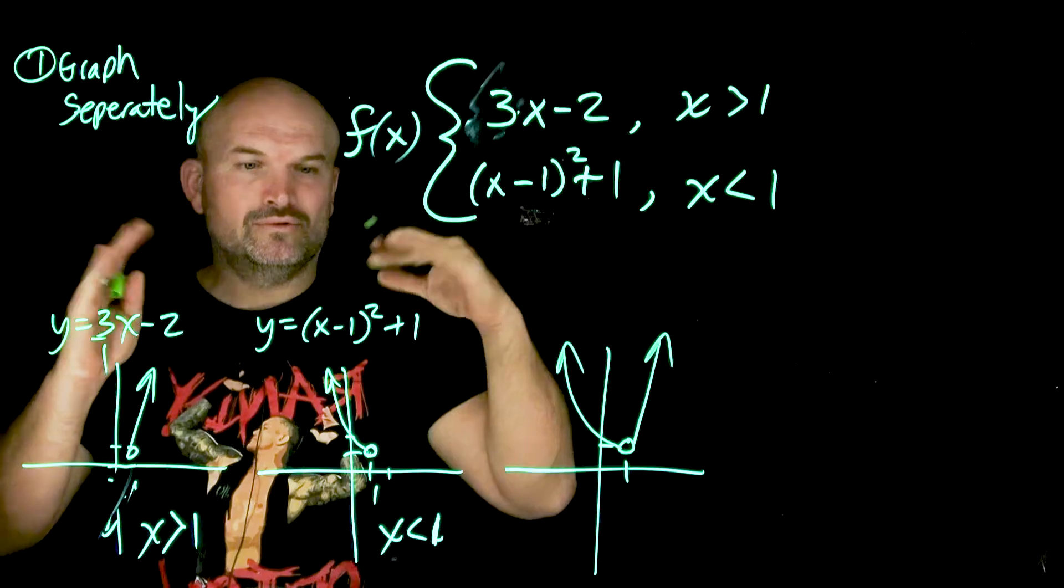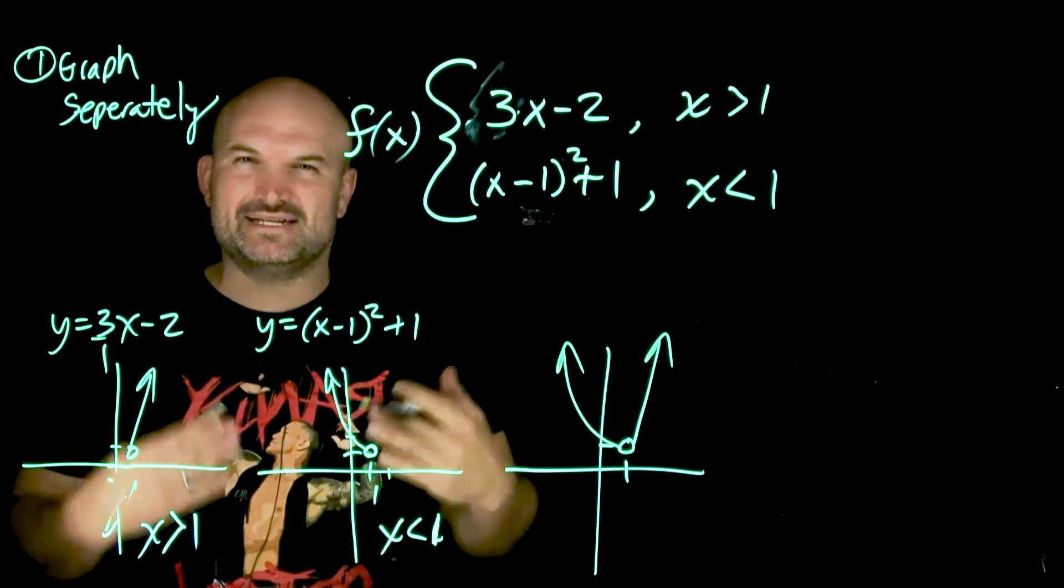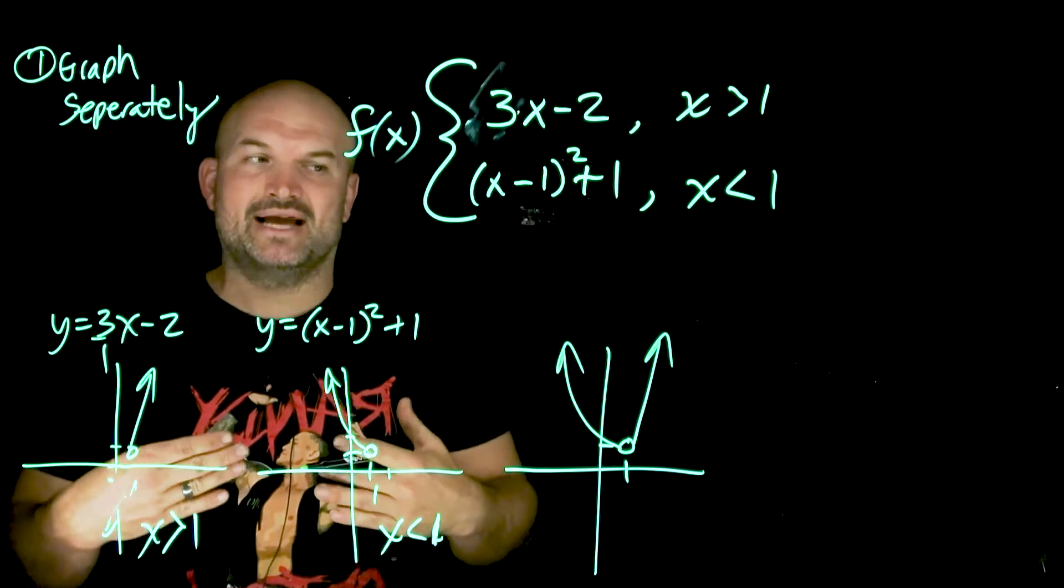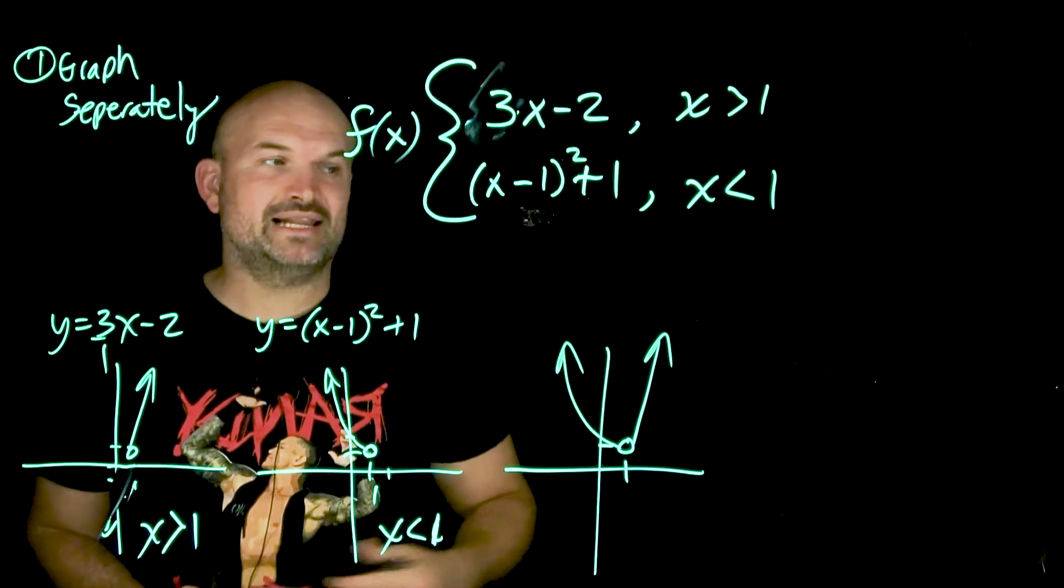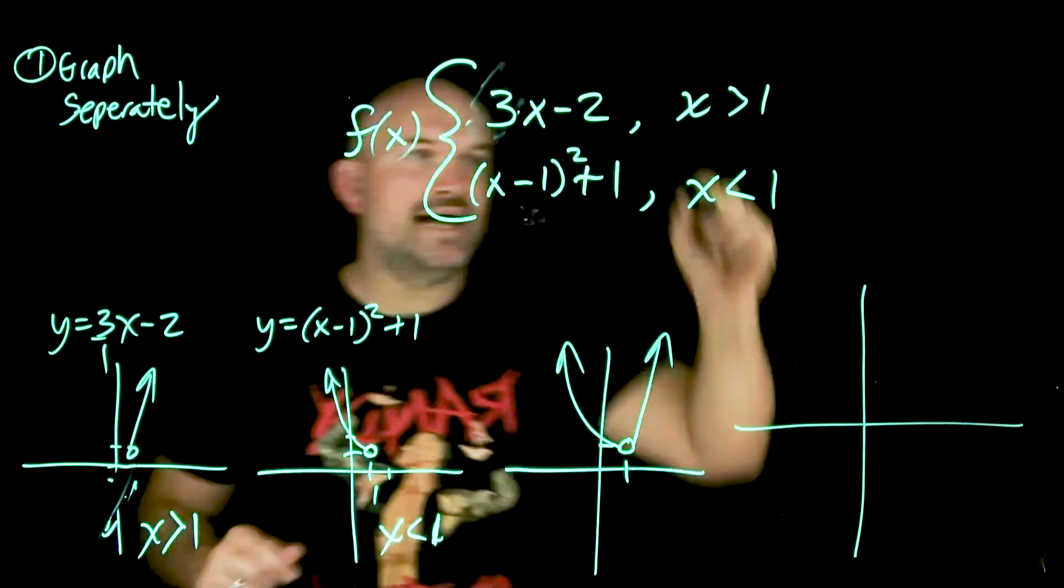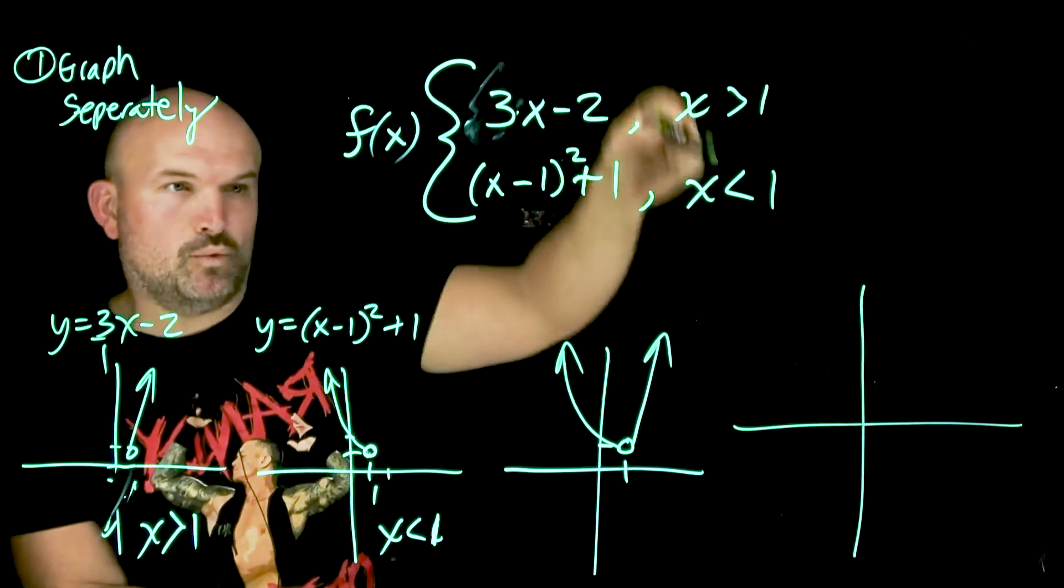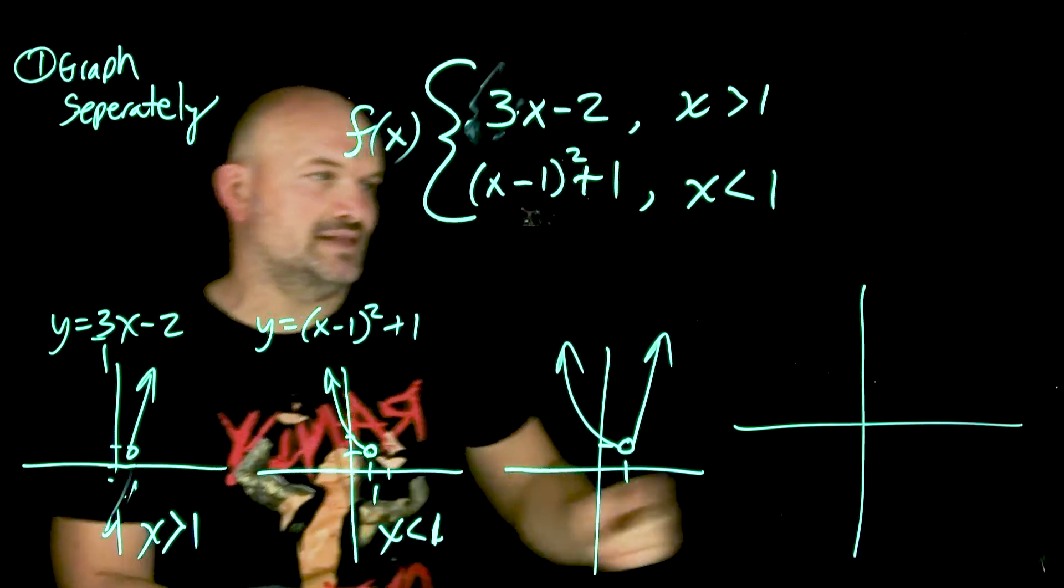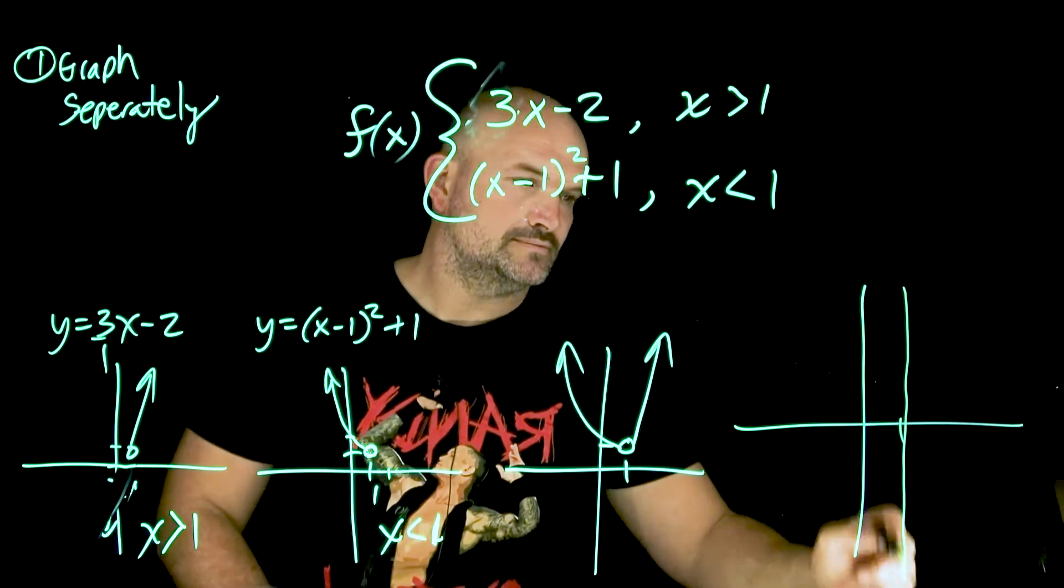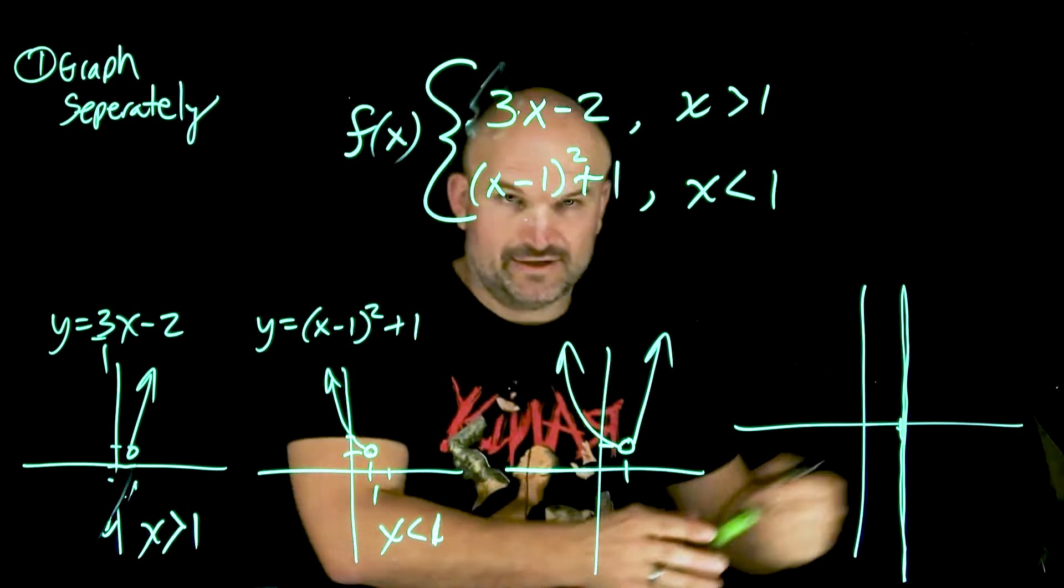Now, what about if you feel good with graphing, and you kind of want something, a tip that's going to make things go by a little bit faster? Well, in that case, what I like to do is take my xy-axis, and where my domain restriction is at 1, what I'm going to do is I'm going to draw a line.